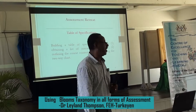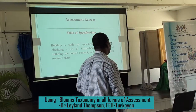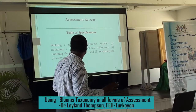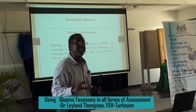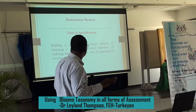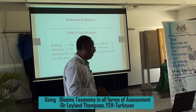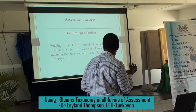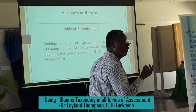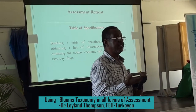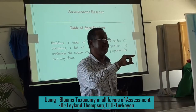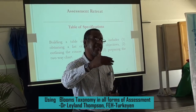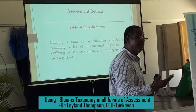Building a table of specifications includes: one, obtaining a list of instructional objectives; two, outlining the course content; and linking them together. You must have your instructional objectives and your course content. Those of you who have looked at CXC syllabuses will see they have the content and then the objectives — general and specific. The specific objectives are what you use to make the table of specifications.